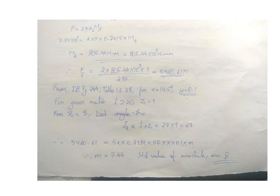And by referring the page 244 table 12.28, for pressure angle 14.5 degree we get the Lewis form factor as y equals 0.1. And for the gear ratio 27 which is greater than 20, we get the number of teeth on worm as 1.